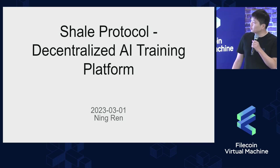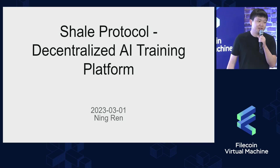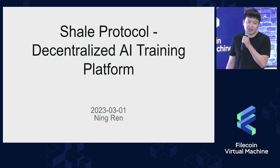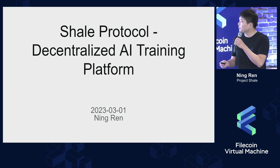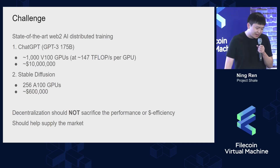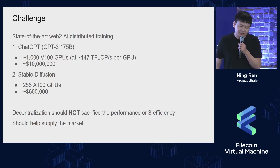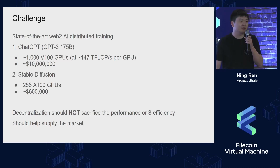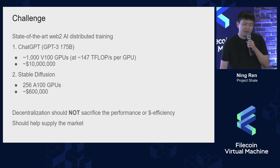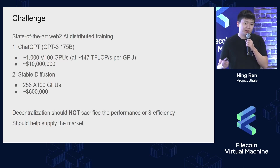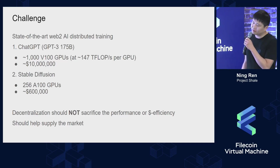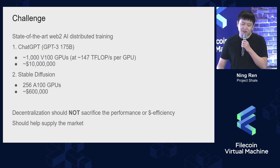Shill Protocol is building a decentralized AI training platform to provide AI training services. Looking at the current cutting-edge deep learning models like GPT-3 and Stable Diffusion, they are getting larger and larger, requiring hundreds to thousands of GPUs to work together to train or fine-tune. They care about performance and dollar efficiency very much, so if we create a service that doubles the price or doubles the training time, there would be no reason for them to switch.